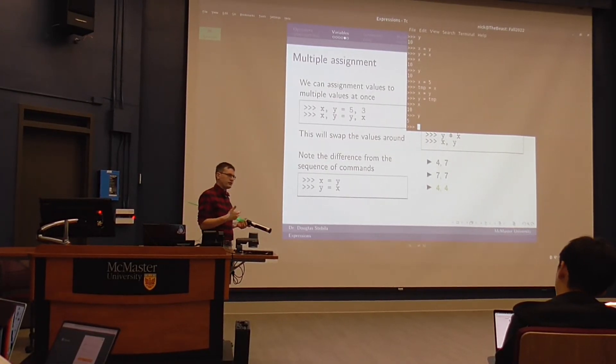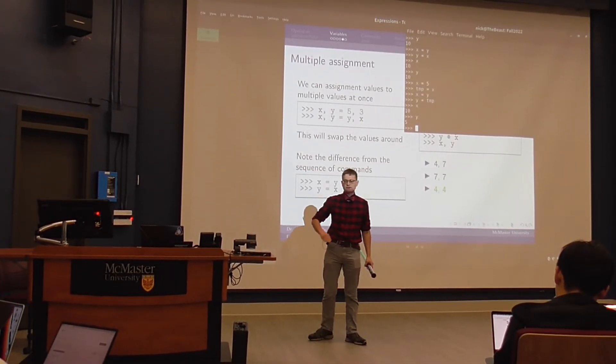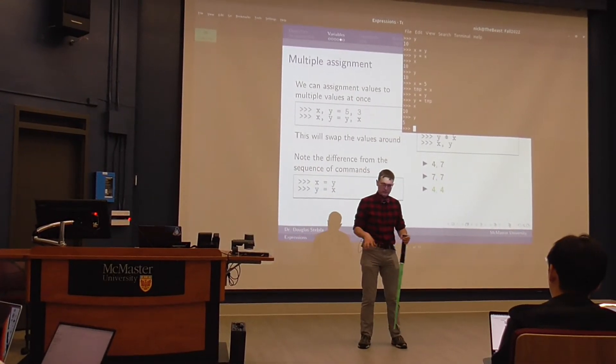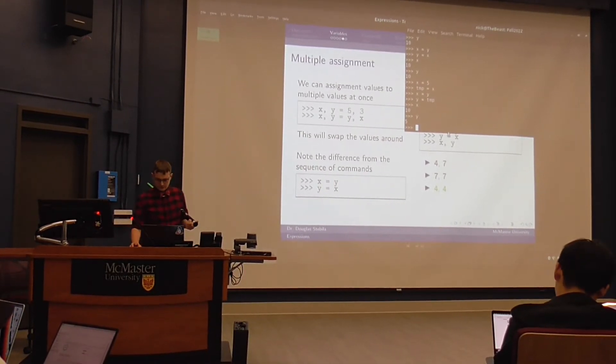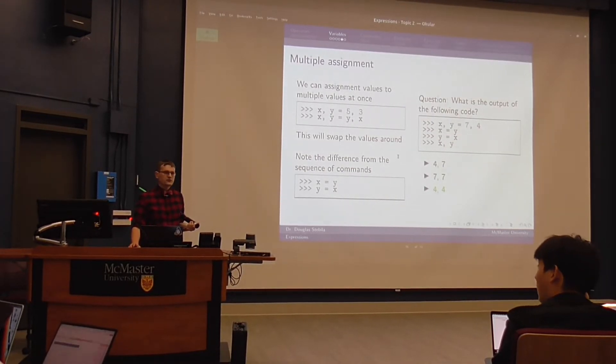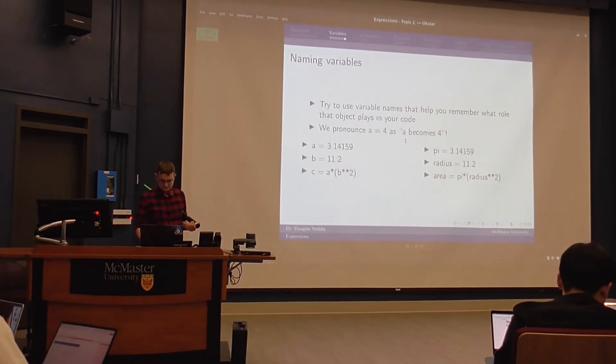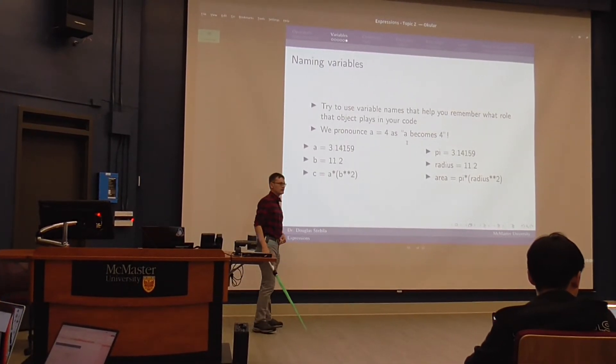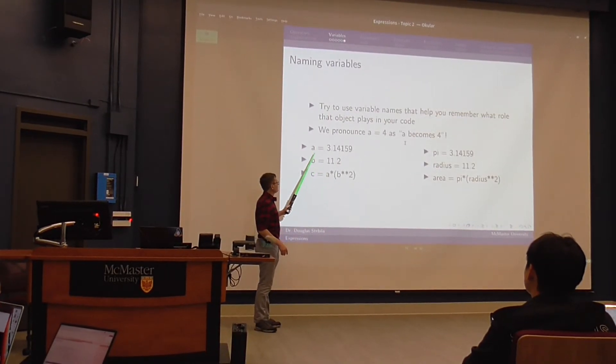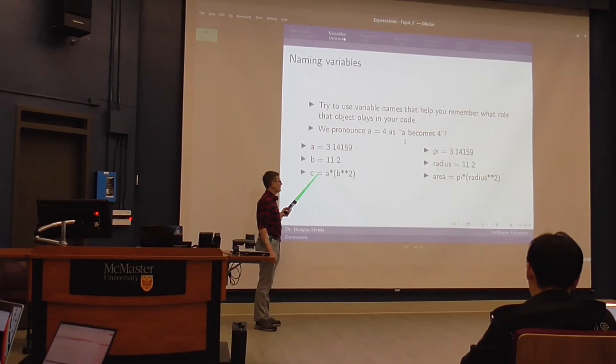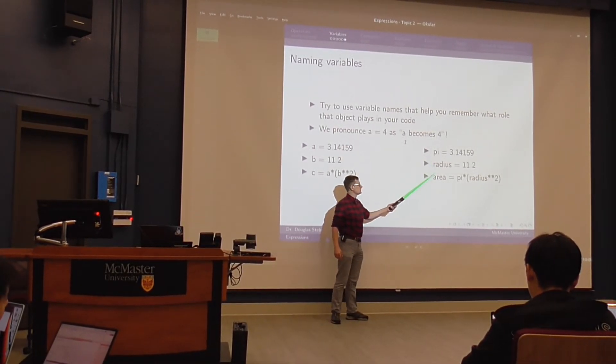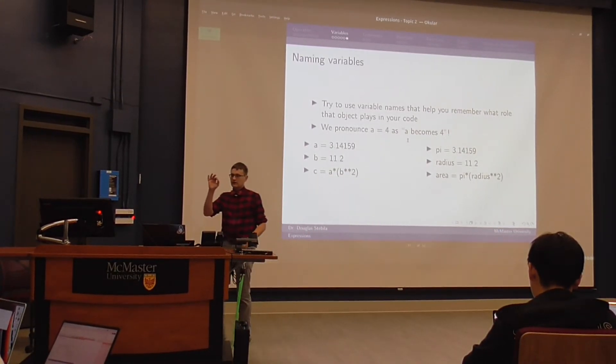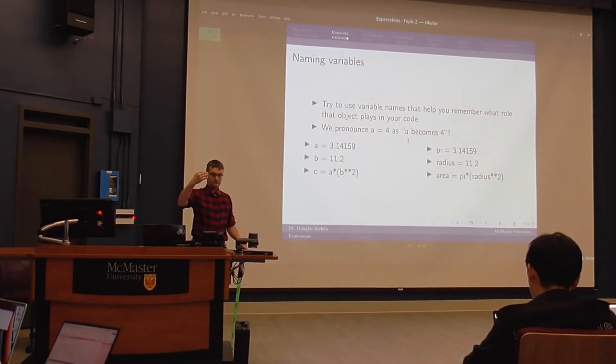This program doesn't really, you don't really know what's going on in this program. We understand that what's being calculated is the area of a circle. Intuitively at first glance, using variable names which are meaningful is very important.